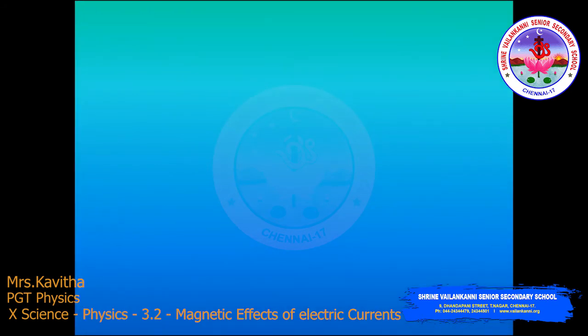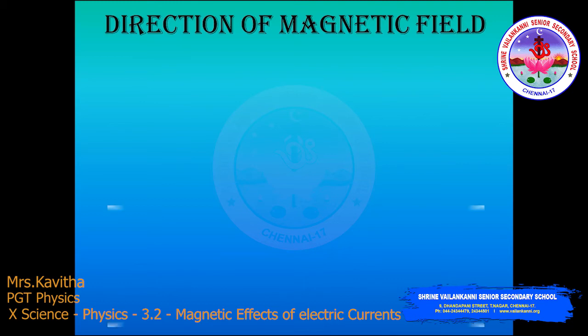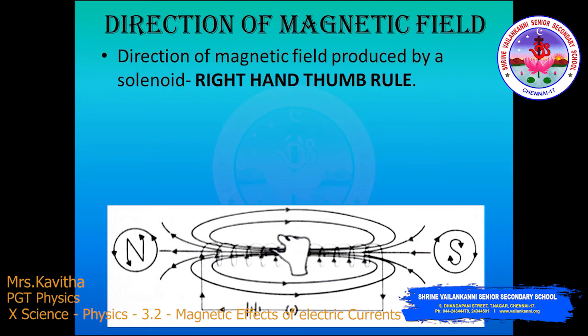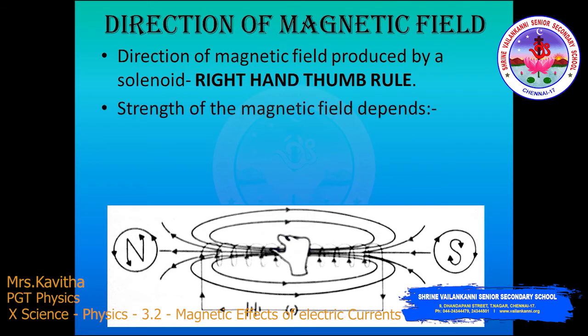The next topic is the direction of the magnetic field. The direction of the magnetic field produced by a solenoid can be determined by the right-hand thumb rule. If we hold the solenoid in the right hand such that the curled fingers point in the direction of current, then the thumb gives the direction of the magnetic field. The direction of the magnetic field produced by a solenoid can also be determined with the help of the bar magnet analogy.